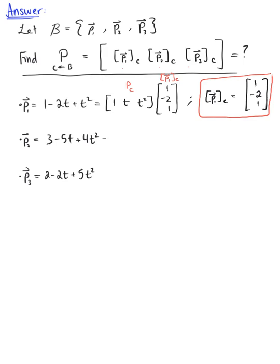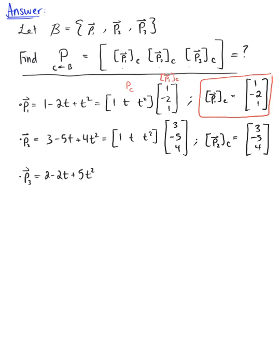We do the same for the other two vectors. For p sub 2, the standard basis matrix {1, t, t squared} is multiplied by the coefficient column vector [3, −5, 4], so the coordinates of p sub 2 relative to basis C are [3, −5, 4]. For p sub 3, the coefficient column vector is [2, −2, 5], so the coordinates of p sub 3 relative to basis C are [2, −2, 5].